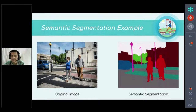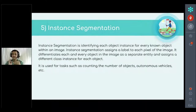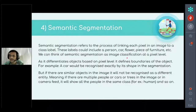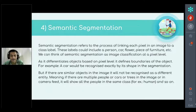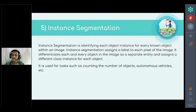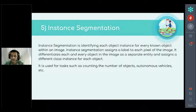To overcome this limitation, we have instance segmentation. Instance segmentation labels each and every pixel of the image. Whereas semantic segmentation only checks for pixel locations belonging to a category like 'human' and labels all of them with the same label, instance segmentation assigns each individual object its own unique ID and unique label.